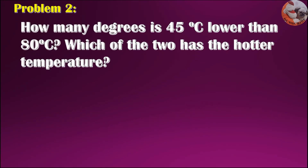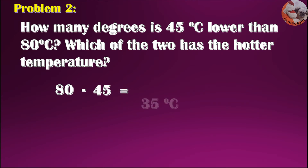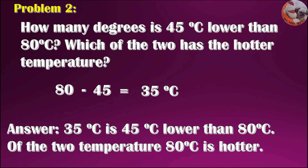Problem 2. How many degrees is 45 degrees Celsius lower than 80 degrees Celsius? Which of the two has the hotter temperature? What will you do? Subtract from 80: 80 minus 45 is equal to 35 degrees Celsius. So 35 degrees Celsius is 45 degrees Celsius lower than 80 degrees Celsius. Of the two temperatures, 80 degrees Celsius is hotter.